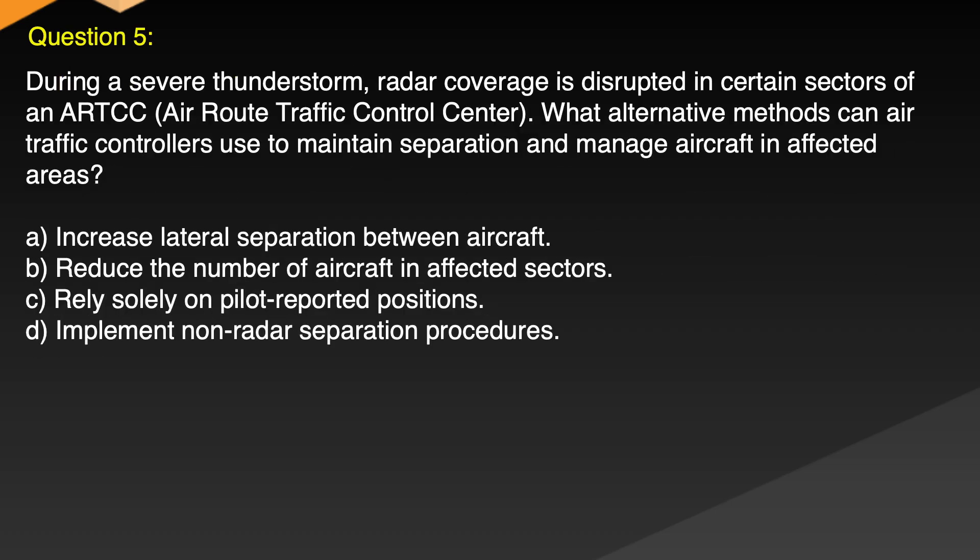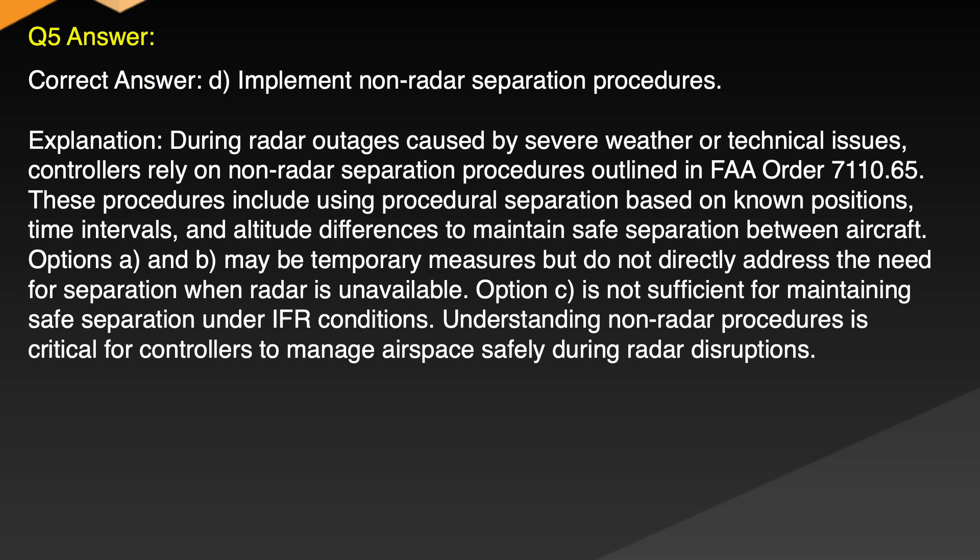Question 5. During a severe thunderstorm, radar coverage is disrupted in certain sectors of an ARTCC, Air Route Traffic Control Center. What alternative methods can air traffic controllers use to maintain separation and manage aircraft in affected areas? A. Increase lateral separation between aircraft. B. Reduce the number of aircraft in affected sectors. C. Rely solely on pilot reported positions. D. Implement non-radar separation procedures. Correct answer: D. Implement non-radar separation procedures.